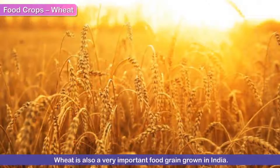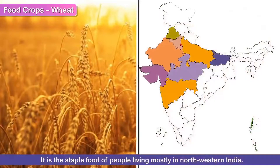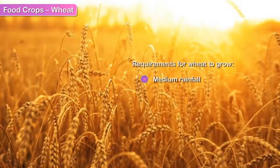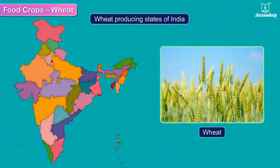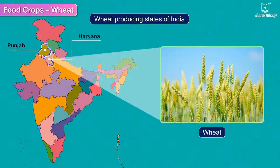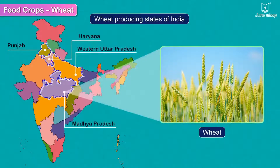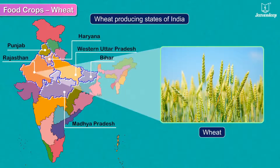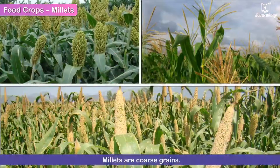Wheat is also a very important food grain grown in India. It is the staple food of people living mostly in northwestern India. Wheat needs medium rainfall and a cool and wet climate. Wheat is cultivated mostly in the northern plains — in Punjab, Haryana, western Uttar Pradesh, and Madhya Pradesh. Many areas of Bihar, Rajasthan, Gujarat, and Maharashtra also produce wheat.